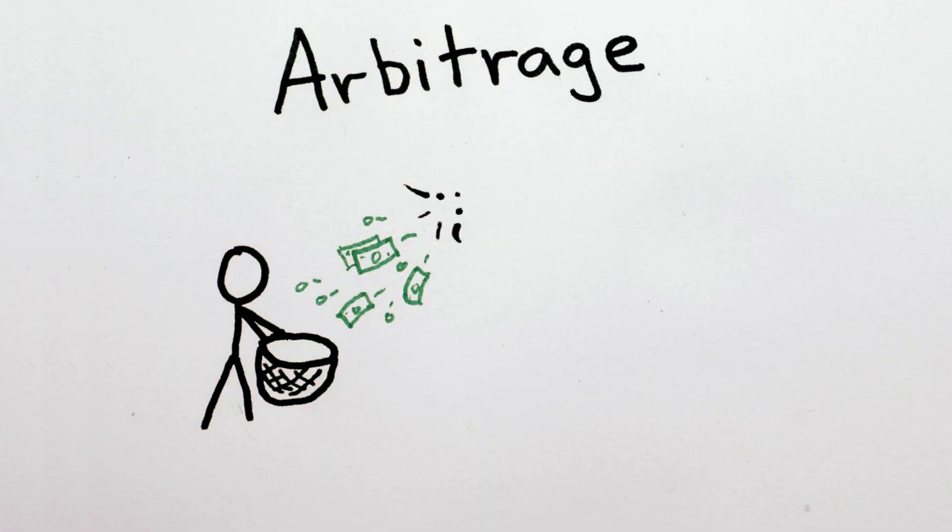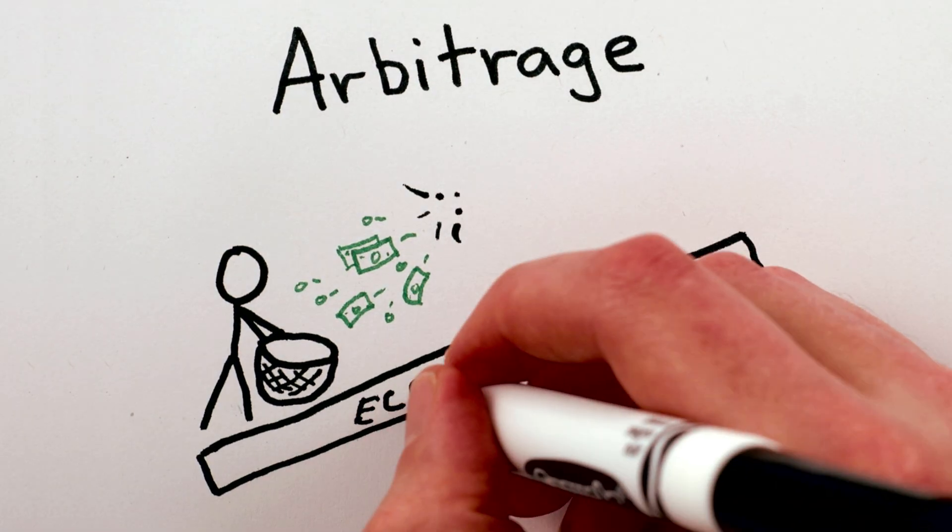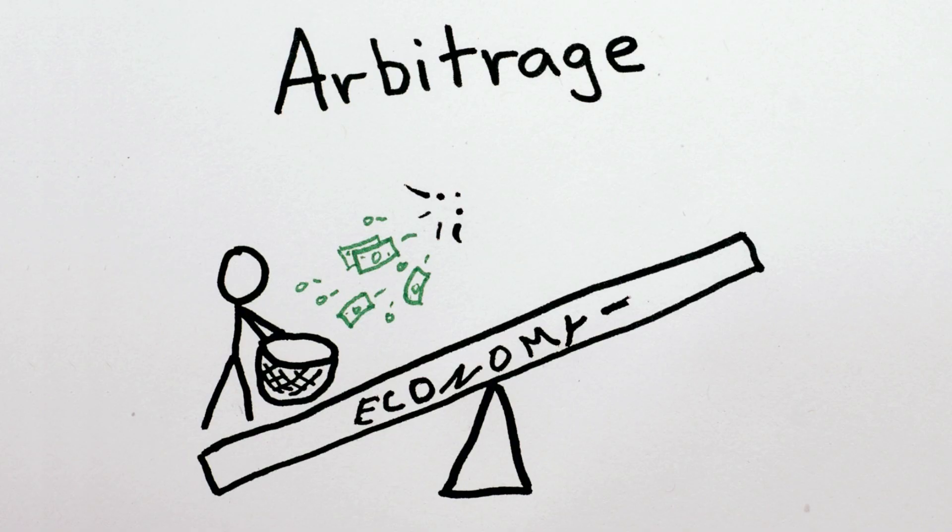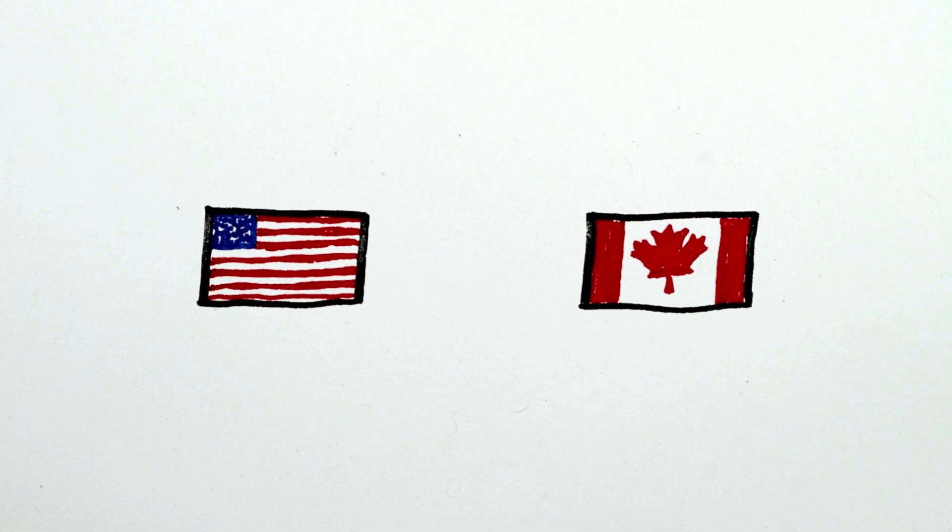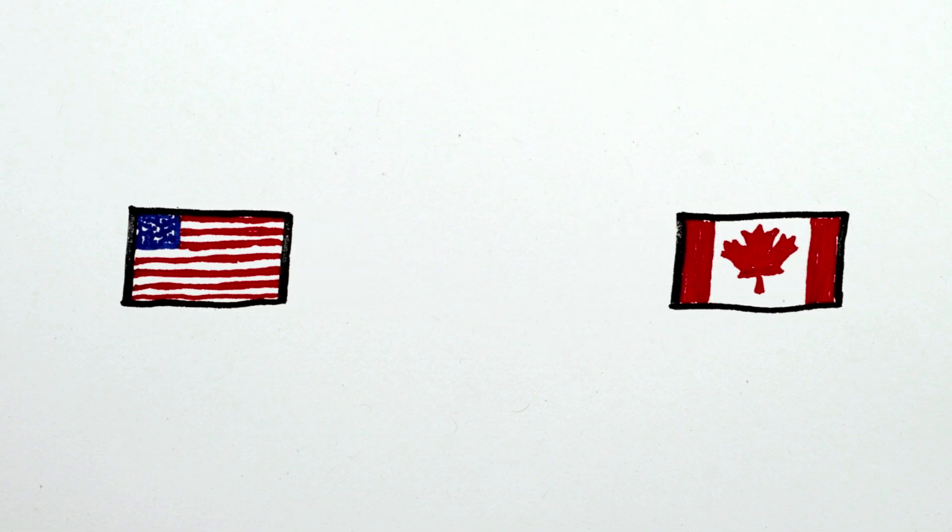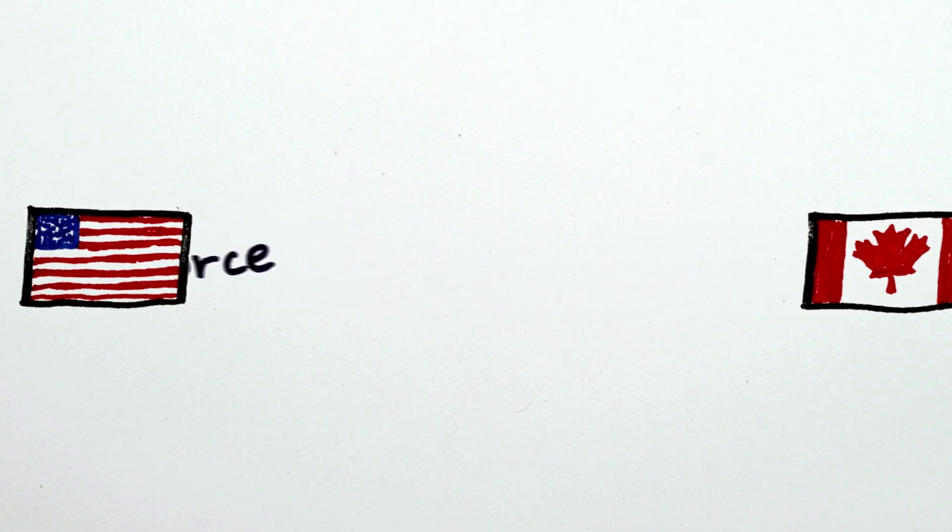It's called arbitrage, and anytime it's possible, it means that the economy isn't in an equilibrium or optimal state. So much for the invisible hand of the market. But anyway, in physics, this effect of moving real value is called momentum transfer, or in day-to-day terms, a force. And now we'll see why.